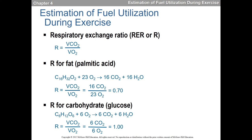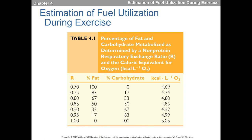RER for palmitic acid, a 16-carbon saturated fat, is 0.7. The stoichiometry: C16H32O2 requires 23 oxygens and produces 16 carbon dioxides and 16 waters. CO2 divided by O2 gives 16/23, approximately 0.69 — we round to 0.7. An RER of 0.7 means we're burning 100% fat for fuel. For glucose, C6H12O6, we get 6 CO2 over 6 O2, which equals 1.0. So the range is 0.7 for 100% fat to 1.0 for 100% carbohydrate, with 0.85 representing 50/50.